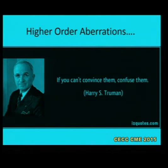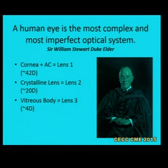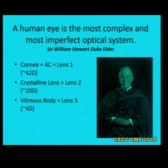I'll try to convince you rather than confuse you. As Sir Duke Elder has said, the human eye is the most complex but most imperfect optical system, comprising of cornea plus anterior chamber filled with aqueous working as lens 1 at about 42 diopters, crystalline lens as lens 2, and vitreous body as lens 3. Because this is a biological system and not truly a glass system, it is prone to so many aberrations because of biological deviations.